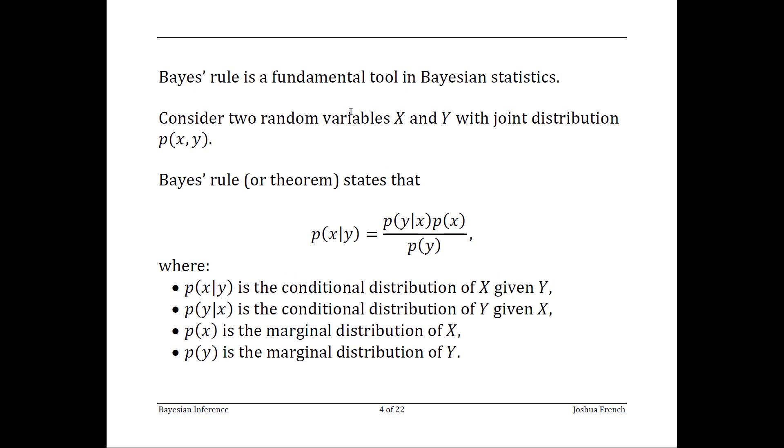Lastly, you may be wondering exactly where Bayesian statistics got its name. The primary reason that Bayesian statistics is called Bayesian statistics is because it heavily relies on a probability result known as Bayes' rule. Bayes' rule basically says that if we have two random variables, x and y, then the conditional distribution of x given y can be computed as the conditional distribution of y given x times the marginal distribution of x divided by the marginal distribution of y.